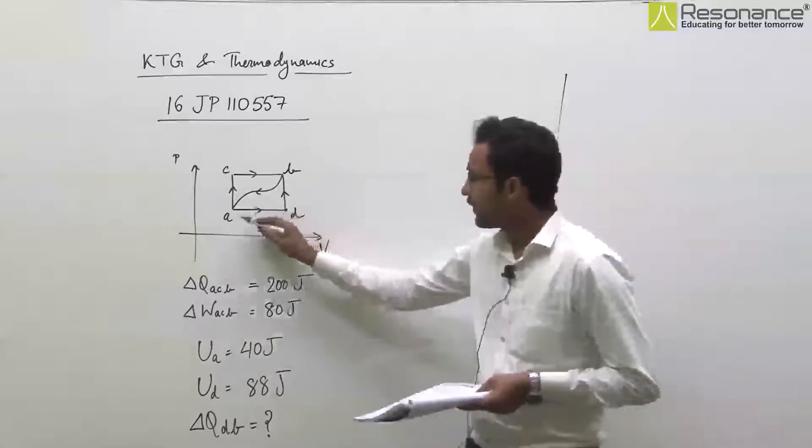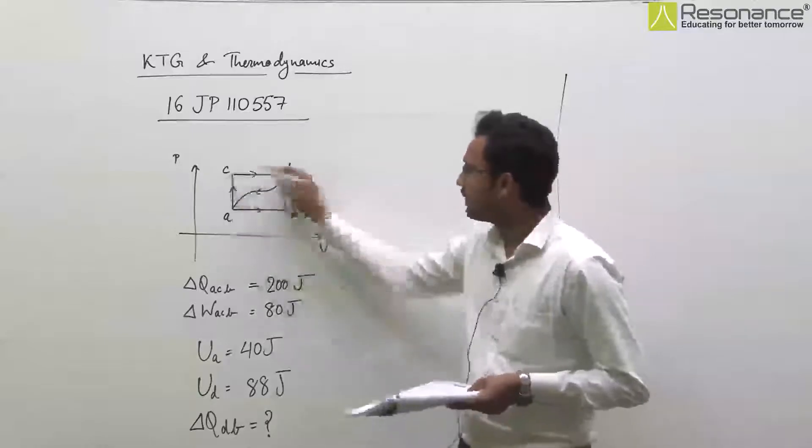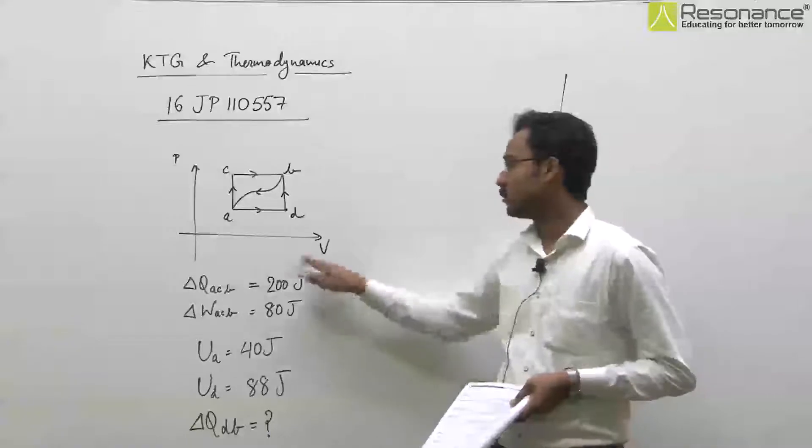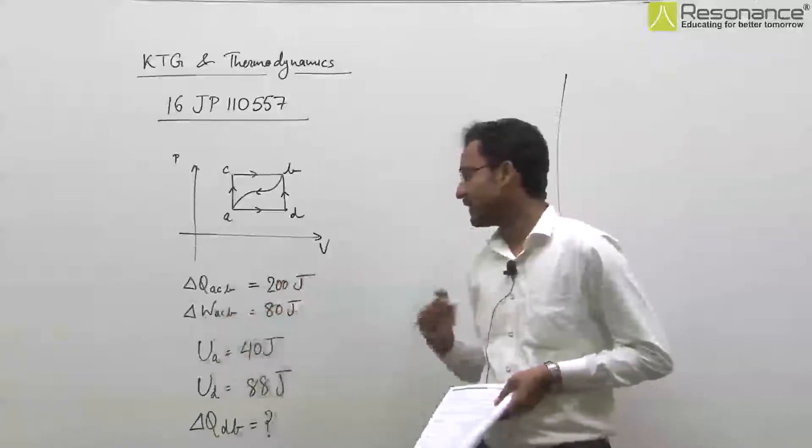In this question, A to C to B process ke through gas ko le jaya gaya hai. Heat absorbed 200 joule hai, jabki work done 80 joule hai.